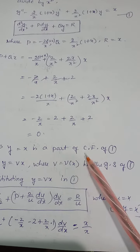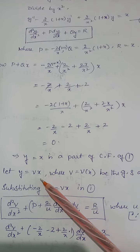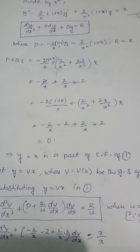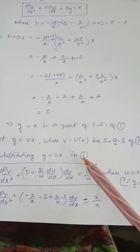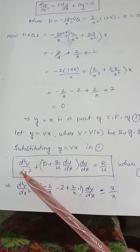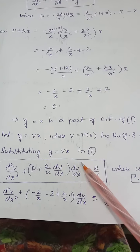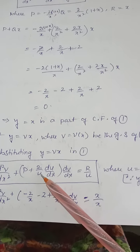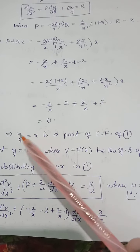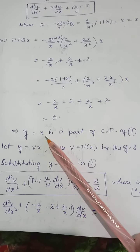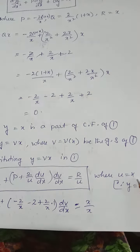Since P + Qx = 0, we take y = x as part of the complementary function of equation 1. We set y = vx, where v is a function of x. Substituting y = vx in equation 1 and simplifying, we get d²v/dx² + (P + 2/u · du/dx)(dv/dx) = R/u, where u = x.